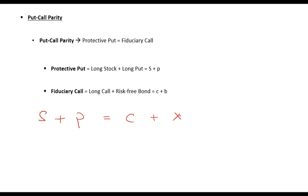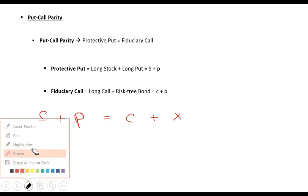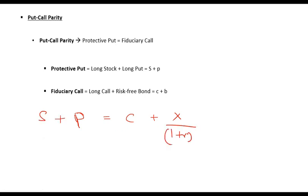When is face value paid? Face value is paid in the future. All other values — spot price, put option price, call option price — are taken as of today. But X, the face value, will be paid in the future. So for it to be compared to the others, it needs to be discounted back to present: X divided by (1 + r) to the power t. The complete equation is: spot price plus put option equals call option plus a bond with face value equal to the exercise price.